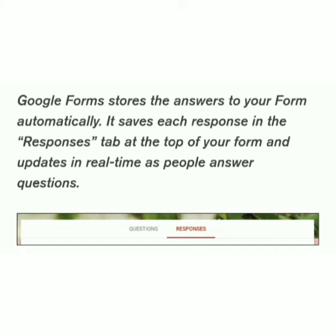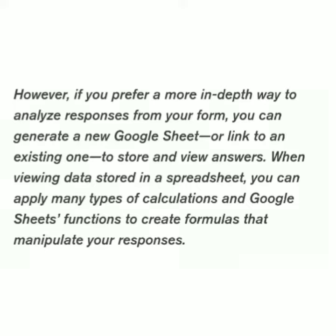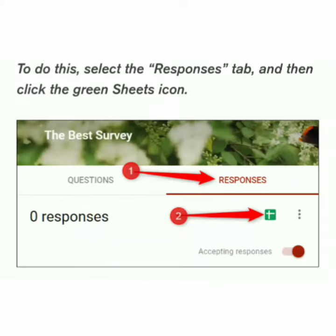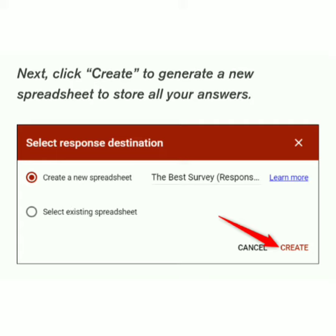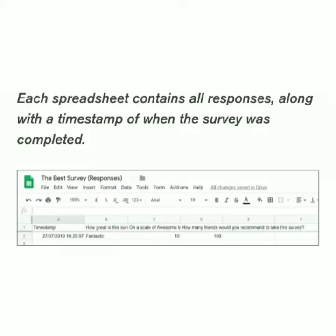However, if you prefer a more in-depth way to analyze responses from your form, you can generate a new Google Sheet. To do this, select the Responses tab and then click the green Sheets icon. Next, click Create to generate a new spreadsheet to share all your answers.